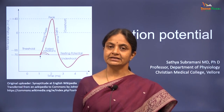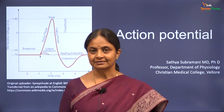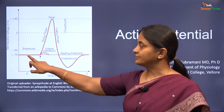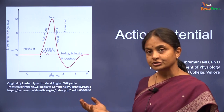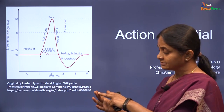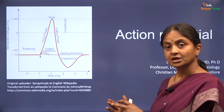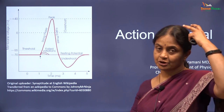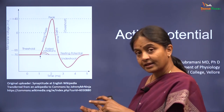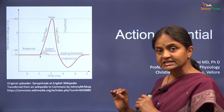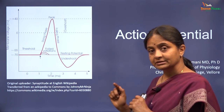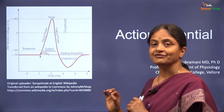An action potential is an exciting phenomenon. A nerve cell, say an axon, has a negative resting membrane potential. Suppose this is a sensory neuron — when you touch, that touch sensory neuron will be excited and transmit the sensation of touch to your cortex so that you realize you are being touched. The way touch excites the sensory neuron is by inducing an action potential, or by changing the membrane potential to a positive potential for a very brief period.